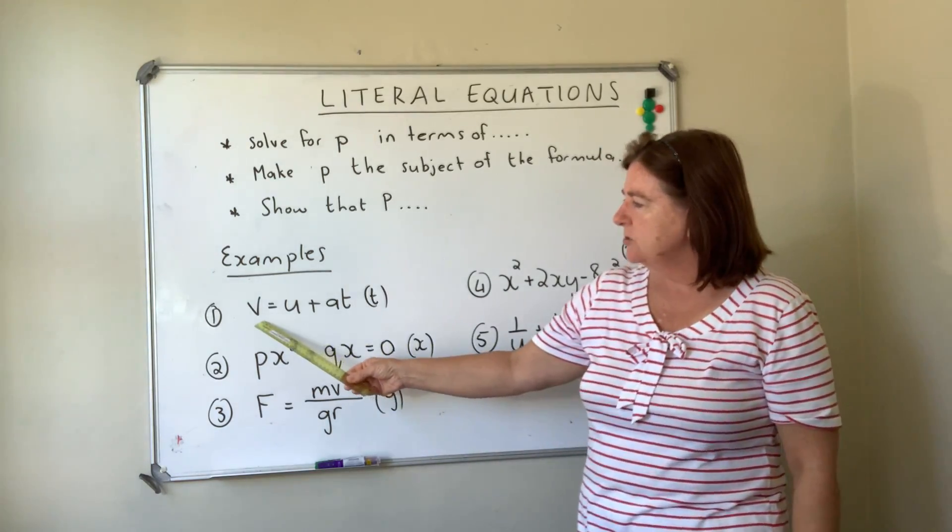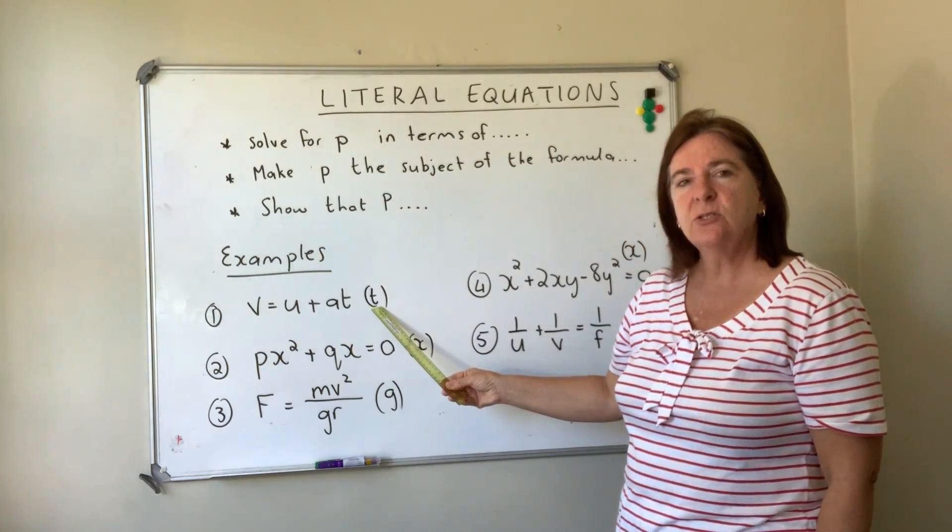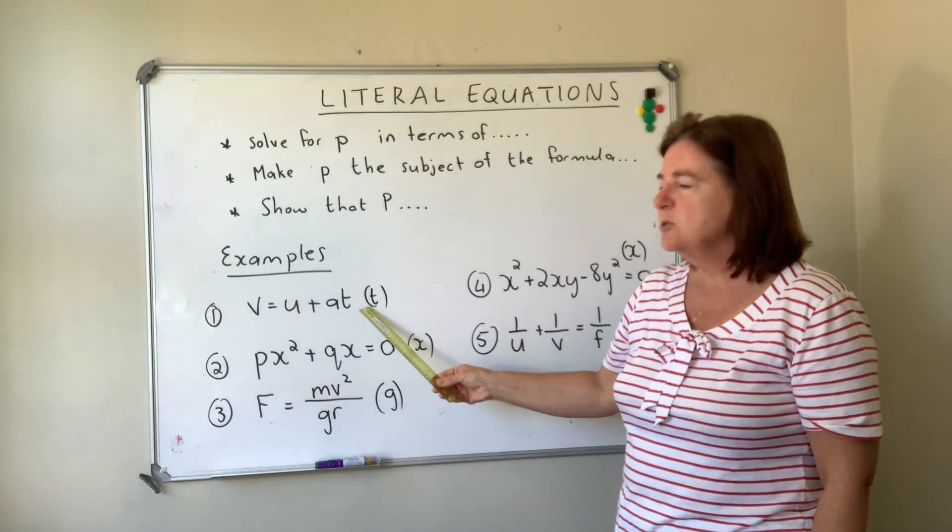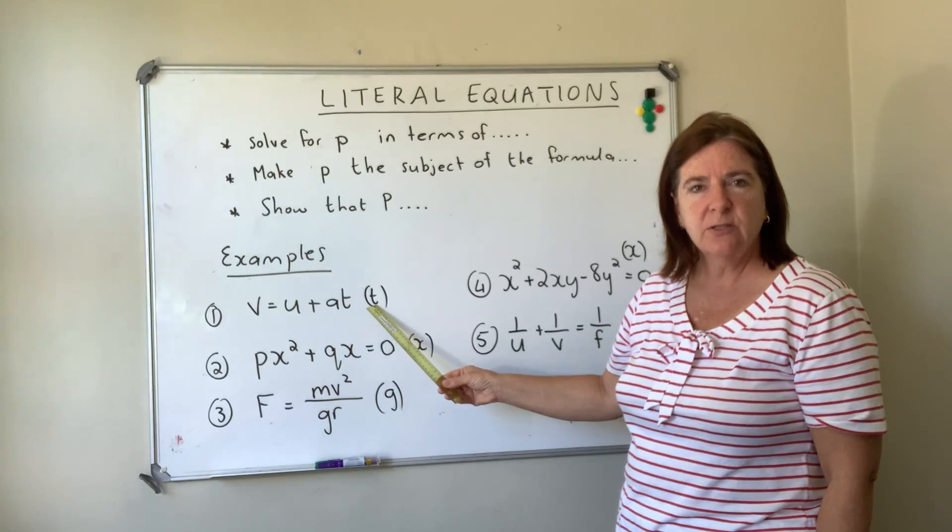Here we're going to solve for t. We always get to solve for the variable that's in the brackets. This one's quite straightforward, there's no fractions or anything.